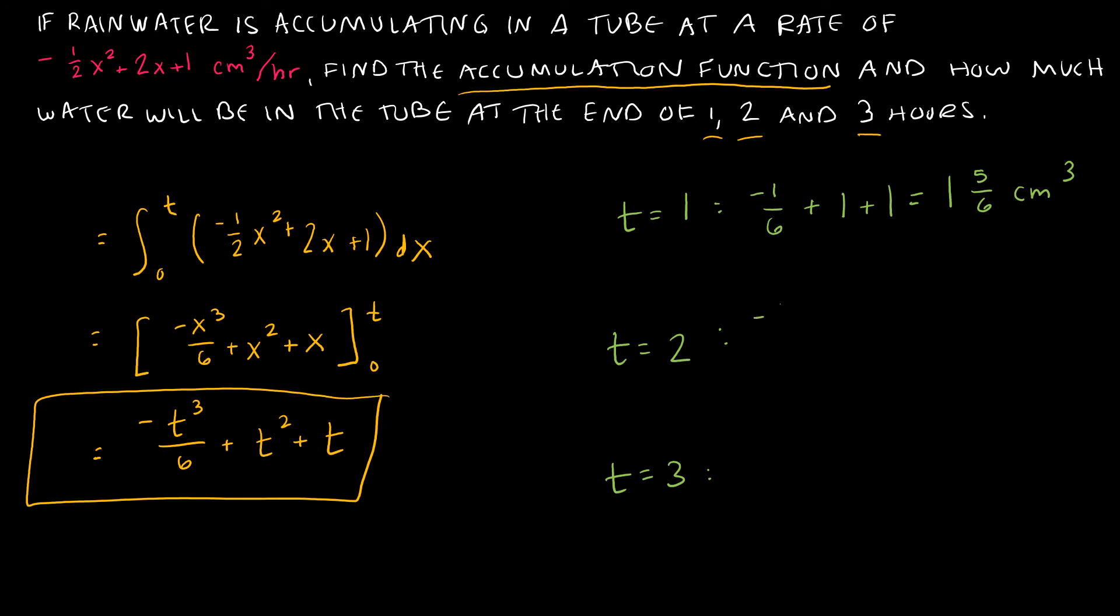If I plug in 2, I get negative 8 over 6, plus 2 squared, which is 4, plus 2, which gives me 4 and 2 thirds cubic centimeters. And if I plug in 3, I get negative 27 sixths, plus 9, plus 3, and combining that gives me 7 and 1 half cubic centimeters.